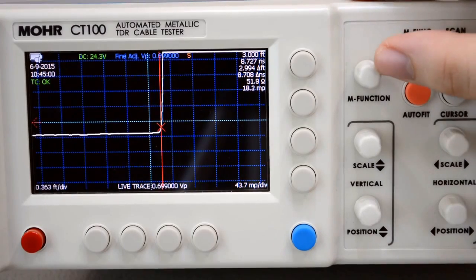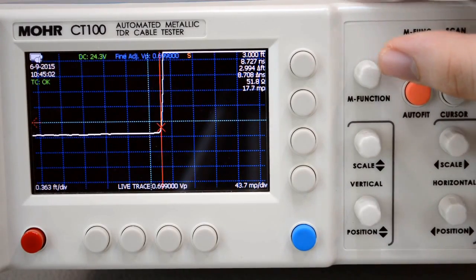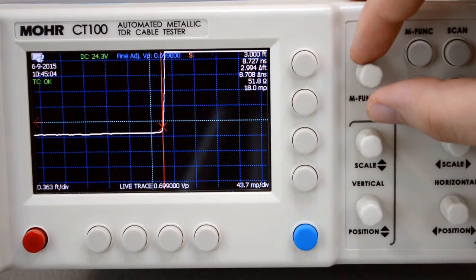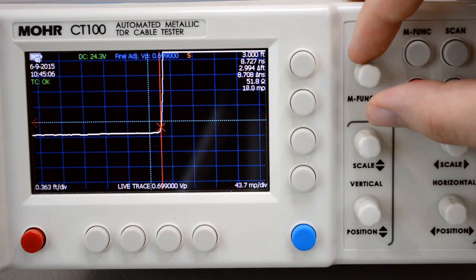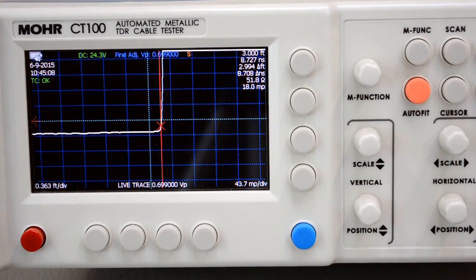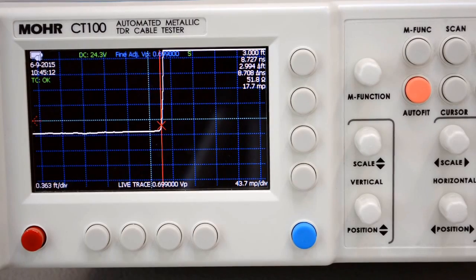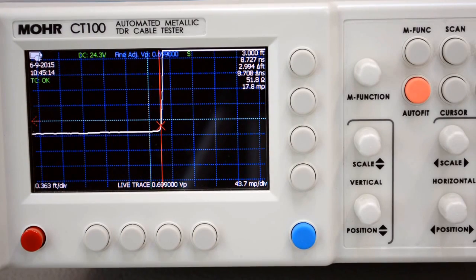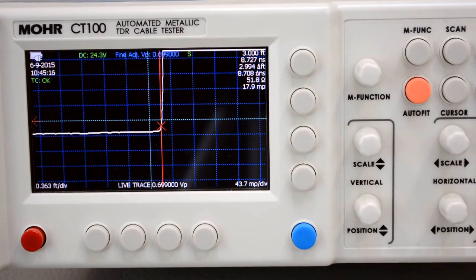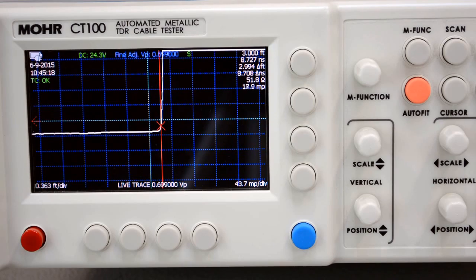Looks like our V sub P is 0.699 which is really close to our expected value of 0.7. Now once you found the V sub P you can use that V sub P on all other cables from this length of cable and you'll be able to get an accurate reading, an accurate measurement from all of them.